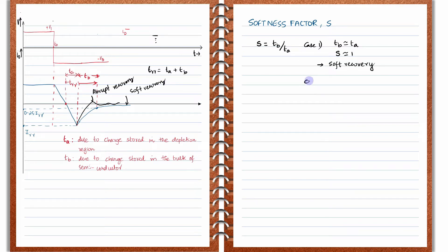Now there is another case, case 2, where TB is less than TA. If TB is less than TA, you can clearly see the value of S will be less than 1. When TB is less than TA, naturally the value of S will be less than 1. Such type of recovery—see here also TB is less than TA, so it has a faster recovery—such type of recovery is called a snappy recovery because it happens quite fast.